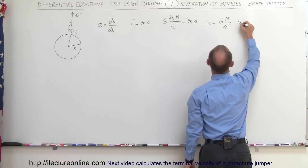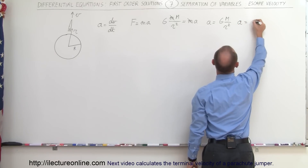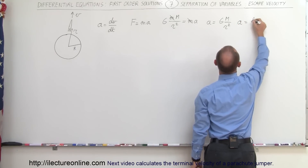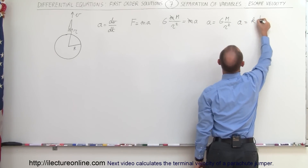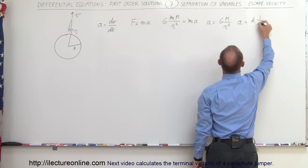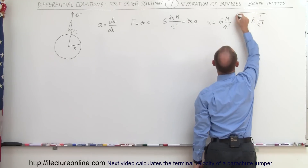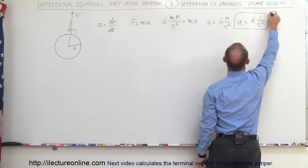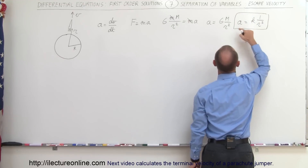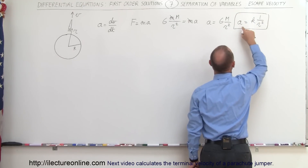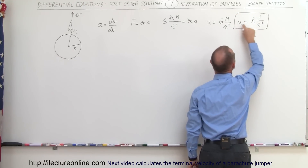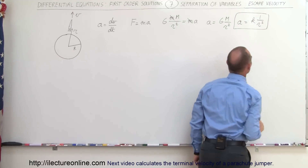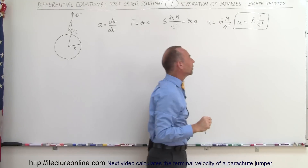We can write that a little more simply: acceleration A can be written as K times 1 over R squared. That's the general equation for the relationship between acceleration and position away from the Earth.